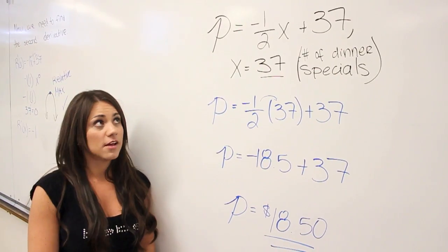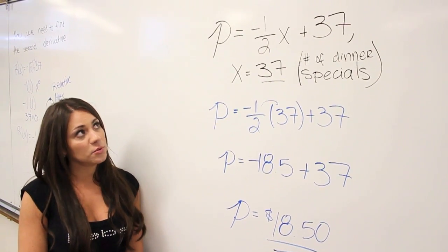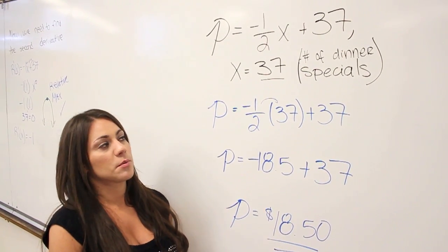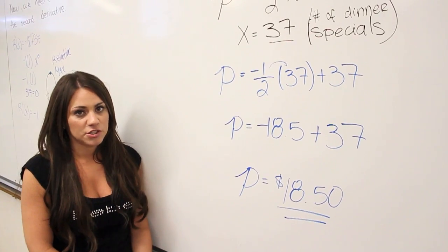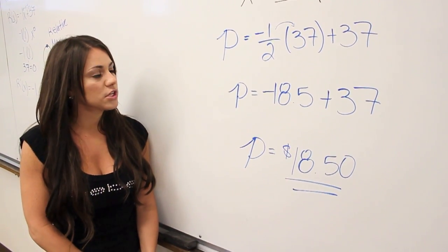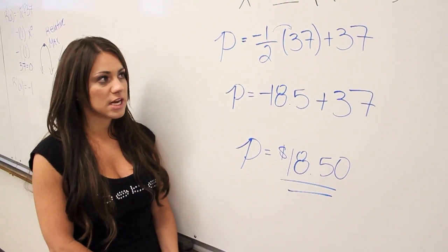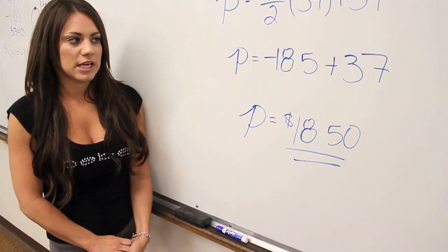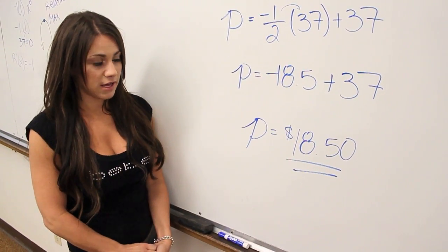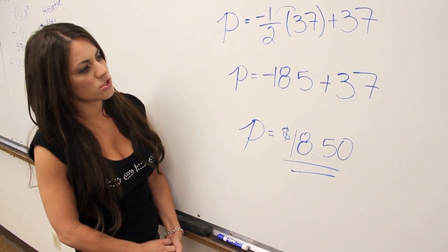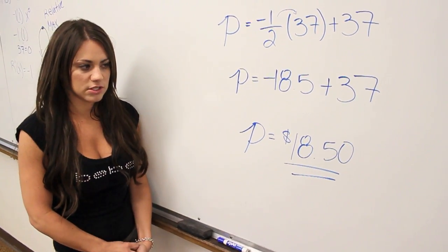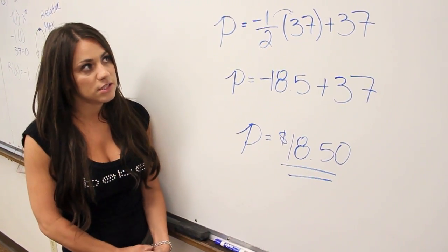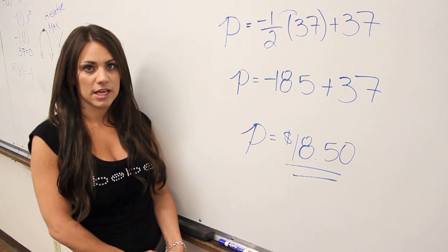So that answer checks out. Using our demand function p equals negative 1 half X plus 37, we plug in X equals 37 from our previous result, which is the number of dinner specials. We get p equals negative 1 half times 37 plus 37, which equals negative 18.50 plus 37, giving us p equals $18.50. This means that in order to have maximum revenue, we need to sell 37 dinner specials at a price of $18.50.